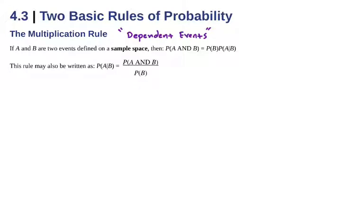Now for dependent events, if we're doing the probability of A and B occurring, we're going to multiply them, but we have to consider the conditional — that one already happened — when we multiply them. And we could rewrite this in order to get our original conditional probability.